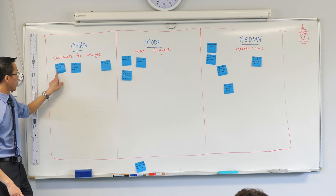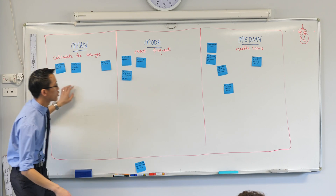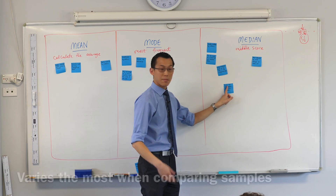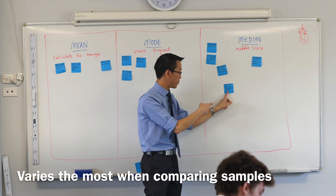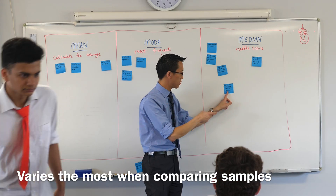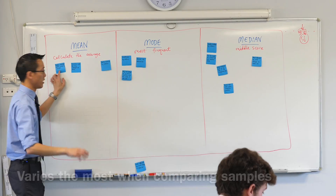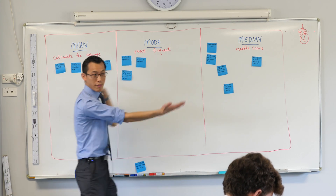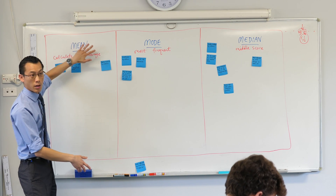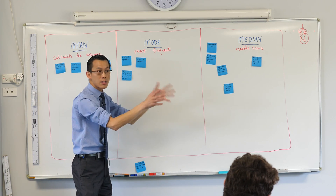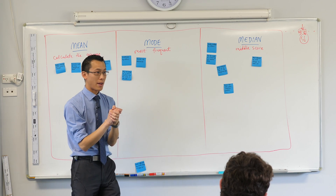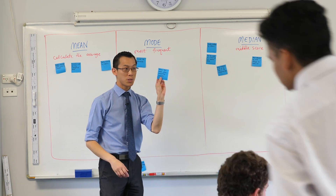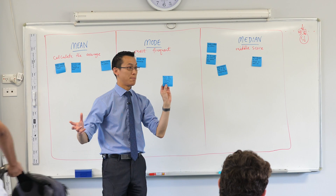There's a contrast to this one. Varies the most when comparing samples. So this one says it doesn't vary much, this one says it does. Which of the two — you know it's not the mean — do you think varies the most when comparing samples?